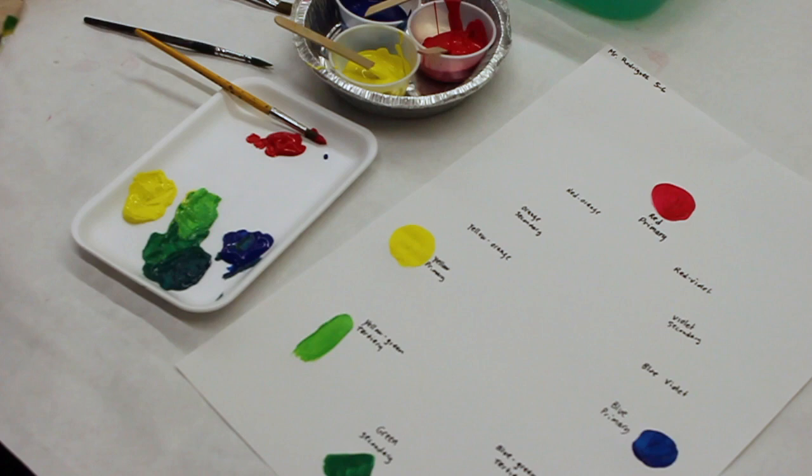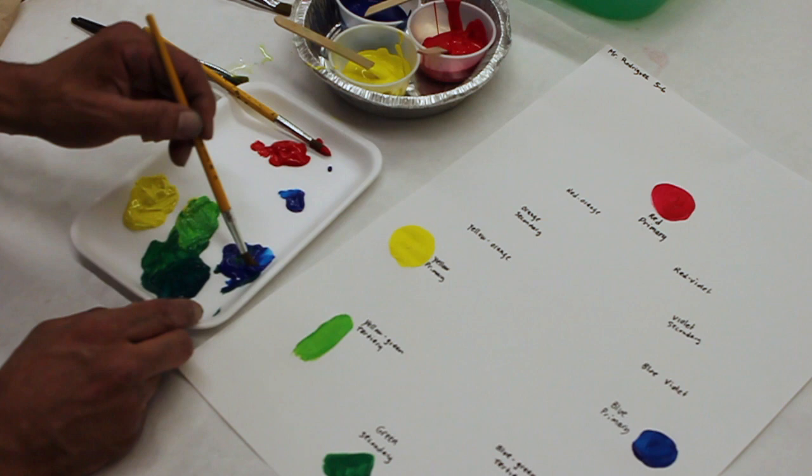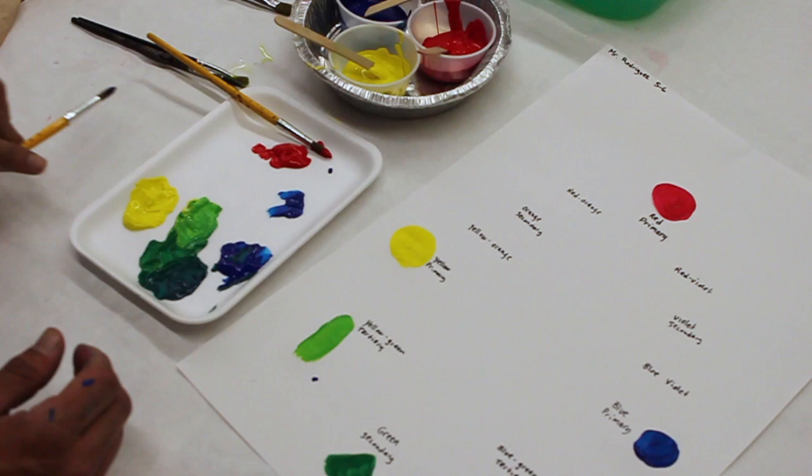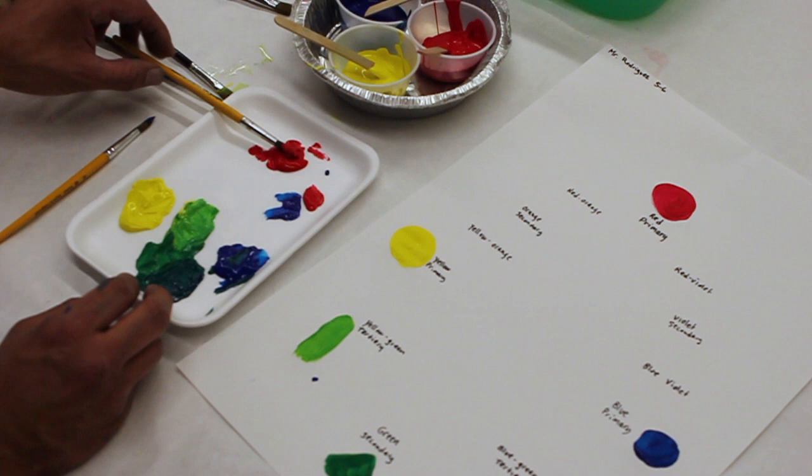Now I'm going to take blue. Be careful not to take any blue that has green in it. I'm going to take blue from this side and I'm going to put it in the middle. And I'm going to, oops, oh well. I'm going to take red and I'm going to put it right next to the blue. And I'm going to mix it with the blue brush.